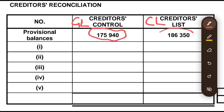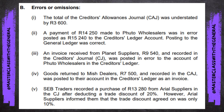Number one: the total of the creditors allowances journal was understated by R3,600. This is going to affect the total. Because we are told about the total of the creditors allowances journal, this wouldn't have affected the individual creditors — so all our figures from the creditors list would have been fine. In the creditors ledger we don't deal with totals. However, this total would have affected our creditors control account in the general ledger.